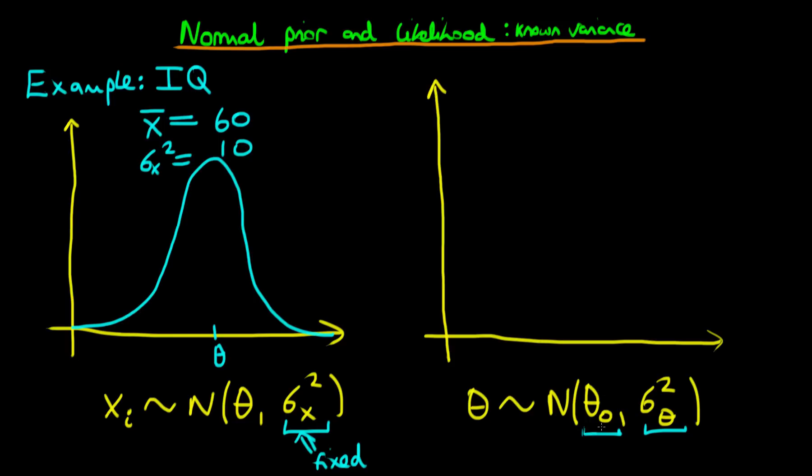Essentially what the professor does is he takes the average of all the mean class test scores for as long as he's been teaching, and he finds that that's 70. He also looks back at the average deviation of the means from one another and finds that the variance here is actually 25. So the professor's views about the parameter before he actually looks at the results from this current year's students are expressed in terms of a normal prior function, which looks something like this with a center on theta zero.